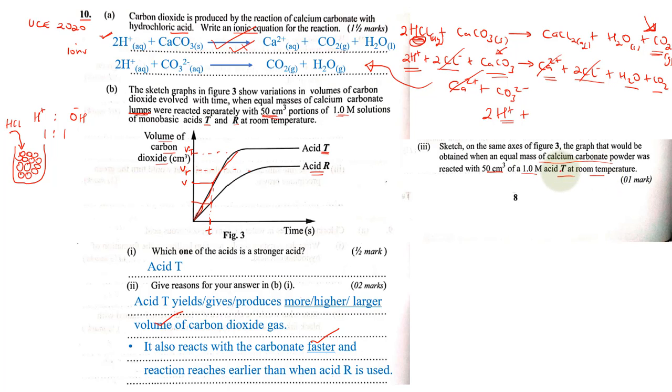They have maintained everything: temperature, volume, molar concentration. The only thing they have changed now is the powder. If you have powder compared to our chunks or lumps, powdered calcium carbonate will have a higher surface area for the acid to react. So that means it's likely to react faster. Our graph will go like this—it will be steeper than acid T that was given.